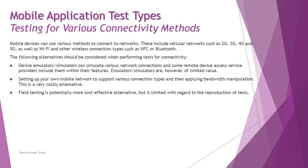Mobile devices can use various methods to connect to a network, including cellular networks such as 2G, 3G, 4G, and 5G, as well as Wi-Fi and other wireless connections which include NFC and Bluetooth.